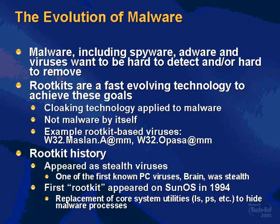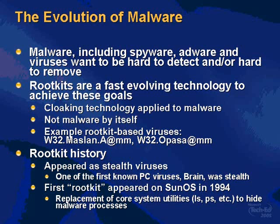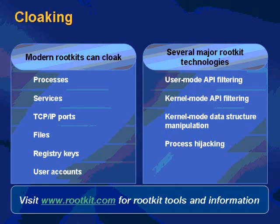The term rootkit appeared in the early 1990s because they first showed up on Unix systems in a high-profile way, on SunOS, where malware authors would replace the core system utilities used to investigate what's going on in the machine — like the PS command, which you use to see the list of running processes, and the LS utility for directory listings. Those utilities would omit from their output the malware processes and malware files.